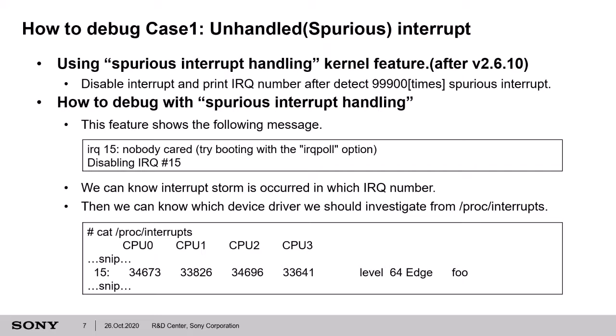To debug Case 1 interrupt storm, we can use the spurious interrupt handling kernel feature, which is implemented after the 2.6.10 kernel. When an interrupt storm is detected by this feature, it disables the interrupt and prints the IRQ number which raised 99,000 spurious interrupts. When this feature detects the spurious interrupt, this message is displayed, so we can clarify which IRQ number caused the interrupt storm.